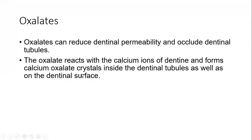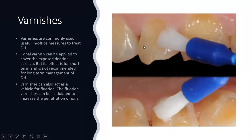Oxalates can reduce dentinal permeability and occlude the dentinal tubule. The oxalate reacts with calcium ions of the dentin and forms calcium oxalate crystals inside the dentinal tubule as well as on the dentinal surface. Varnishes are commonly used in-office measures. Copal varnishes can cover the exposed dentinal surface, but their effect is short-term and not recommended for long-term management. Varnishes can also act as a vehicle for fluoride.